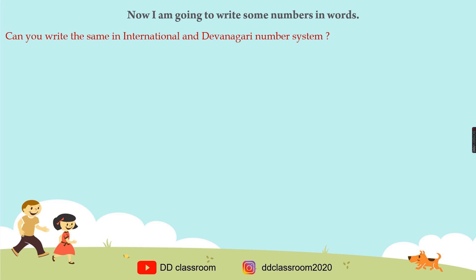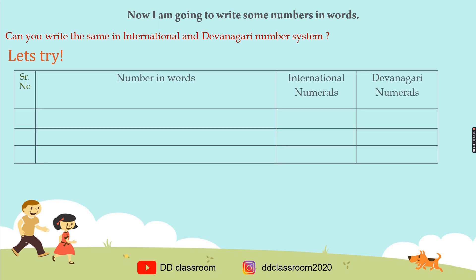Can you write the same numbers in both international and Devanagri number systems? Let's try. Here on the screen we have our first number — serial number 1. The number is 5 lakh 40 thousand and 179. Can we try to write it using the international system?